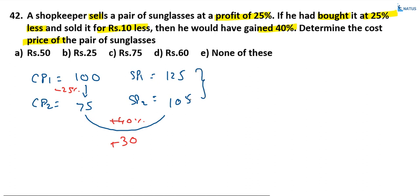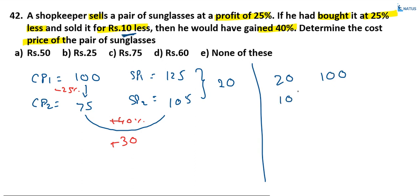The difference between these two is 20. So the difference between the two selling prices is 20 rupees. But according to the question, the difference is 10 rupees. So what is the cost price of the sunglasses? That is equal to 10 by 20 into 100, which equals 50 rupees. Option A is the correct answer.